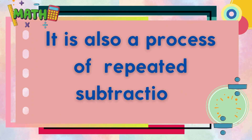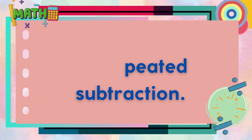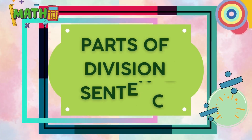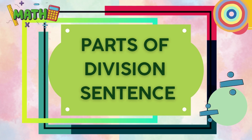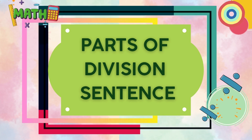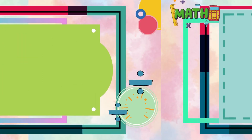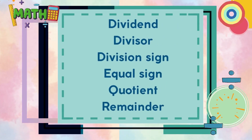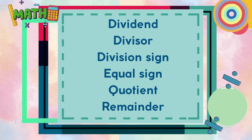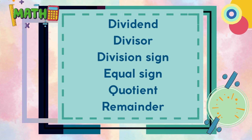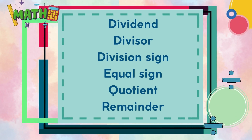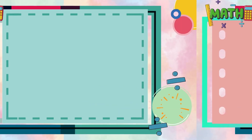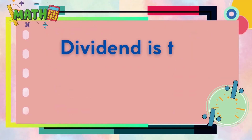Division is also a process of repeated subtraction. The parts of the division sentence are: dividend, divisor, division sign, equal sign, quotient, and remainder.